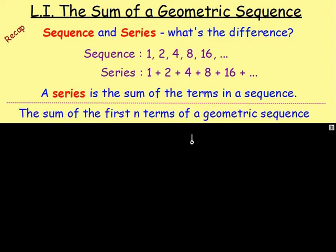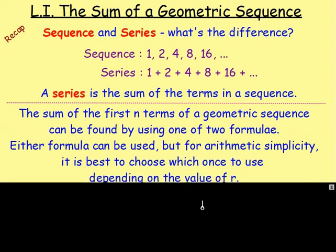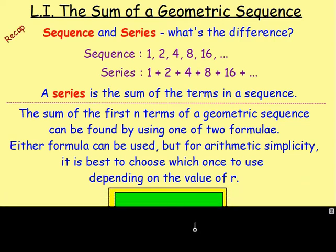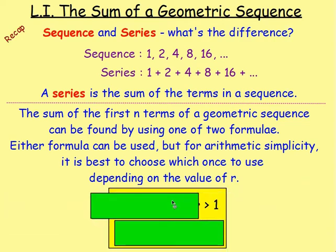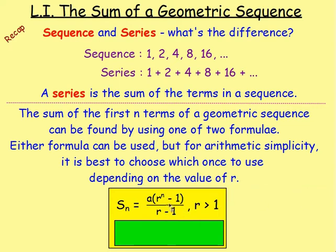Whenever you want to find the sum of those terms, there are two formulas that can be used. It does not matter which one you use, but for arithmetic simplicity, to make the numbers slightly easier, you're best to look at the value of r. If r is bigger than 1, you're best to use this formula: the sum of n terms equals a bracket r to the power of n take away 1, close bracket, all over r take away 1.